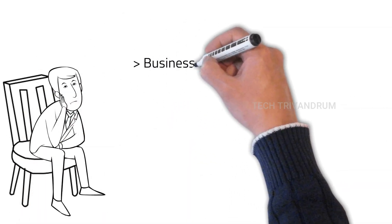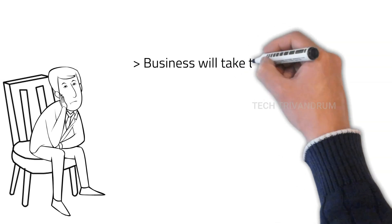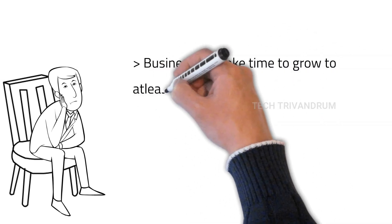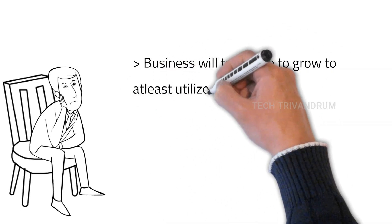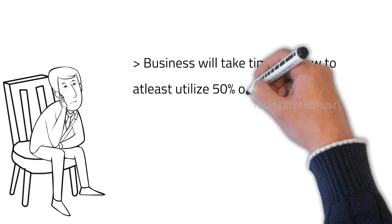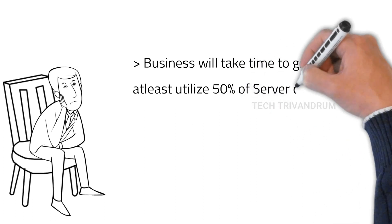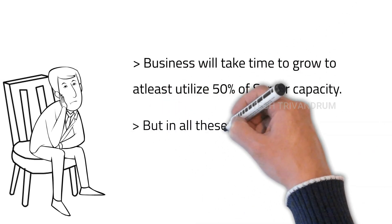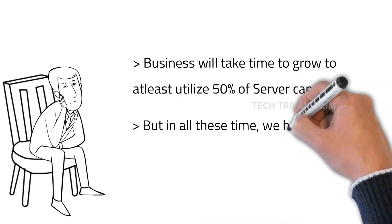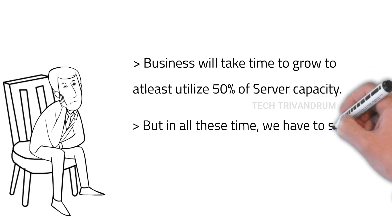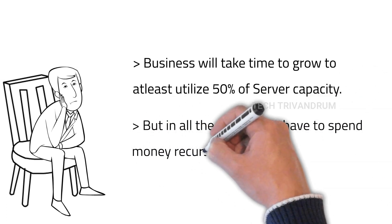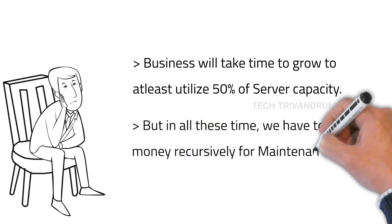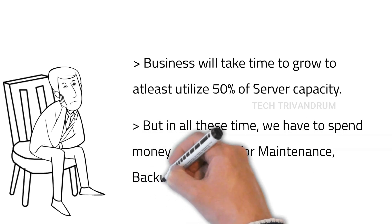It will take time for the business to grow to a level to utilize at least 50% of the server capacity. But in all these times, we have to continuously spend money for periodic backup, maintenance, and security. And at the end of the day, what if the business collapsed? Adam has to consider all these risk factors.